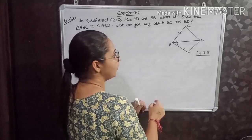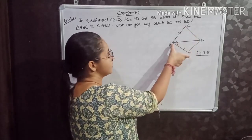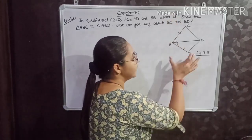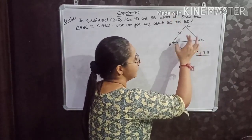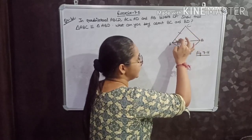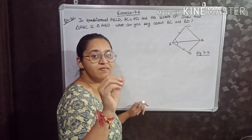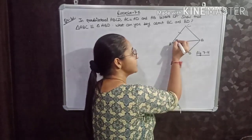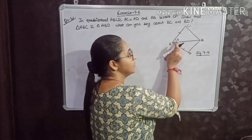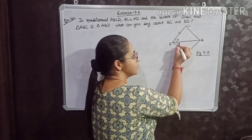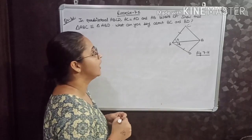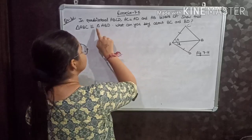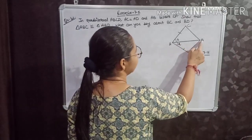AC is equal to AD — this side is equal to this side. AB bisects angle A, which means AB is dividing the complete angle A into two equal parts. So angle 1 is equal to angle 2. We have to show that triangle ABC is congruent to triangle ABD.